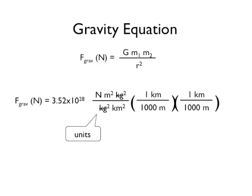There are 1,000 meters in a kilometer, so you need to multiply your numerical answer by 1 kilometer per 1,000 meters twice because these distance units are squared.